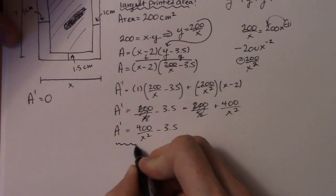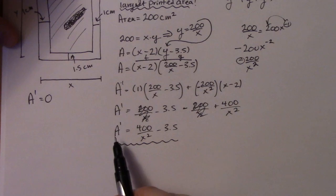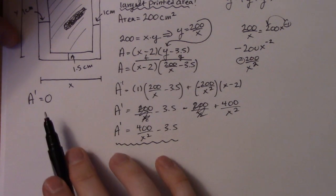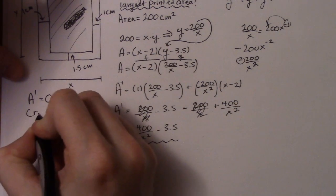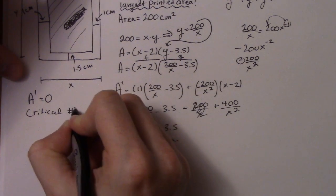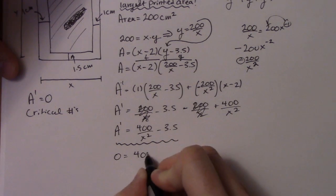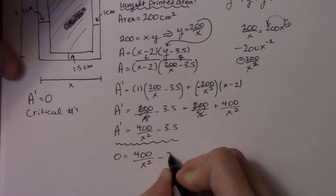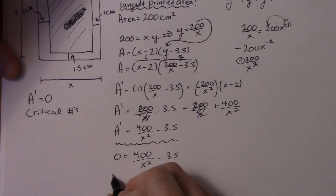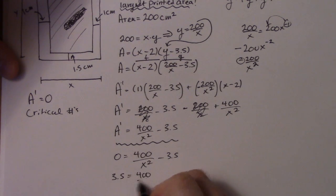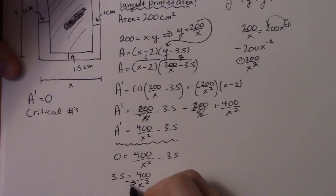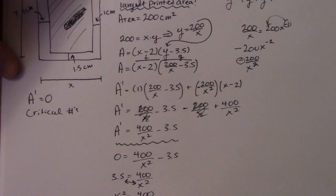So like I said before, when you're thinking about these things, you're going to need to set your first derivative equal to 0 and find what are called the critical numbers. So I do that. So 0 is equal to 400 over x squared minus 3.5. So I can take that 3.5 over and I'll have 3.5 equals 400 over x squared. So then what I like to do is just switch spots. So x squared is equal to 400 divided by 3.5.